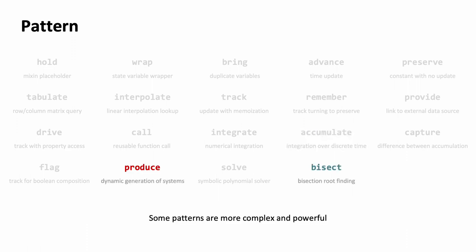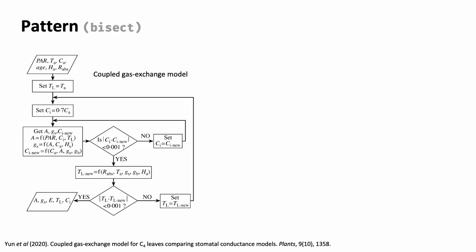There are many other patterns. Some are more common, some are more advanced and specialized. For example, a leaf-level gas exchange model is composed of two models, one for biochemical photosynthesis and the other for stomatal conductance, coupled through a CO2 concentration inside the leaf, which is often determined by numerical optimization.